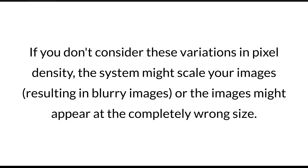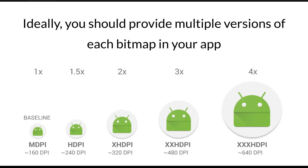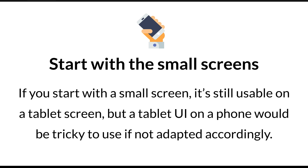We're going to talk about how to optimize images and assets such as icons a little later in this video. Ideally, you should provide multiple versions of each bitmap in your app. However, one of my best recommendations is to use scalable vector graphics whenever possible. Android is going to be responsive in that aspect, so definitely keep this in mind.